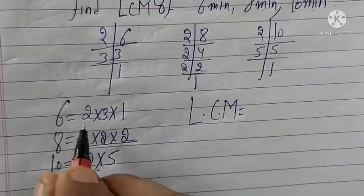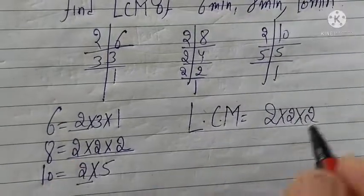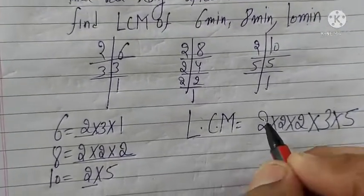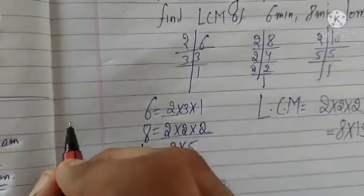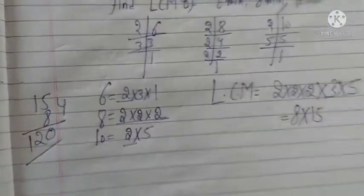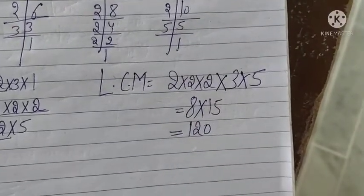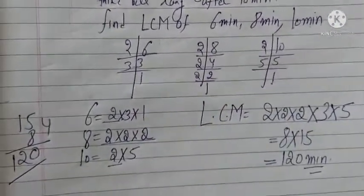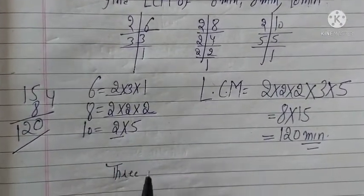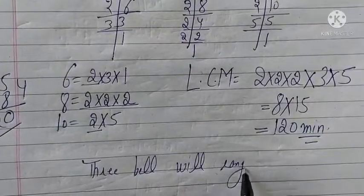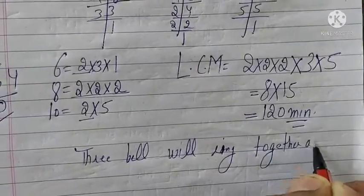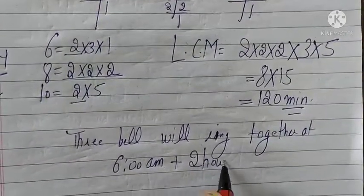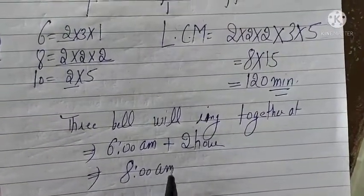For the LCM, we take 2 three times (from 8), then 3 (from 6), and 5 (from 10). So LCM = 2 × 2 × 2 × 3 × 5 = 8 × 15 = 120 minutes, which is 2 hours. So all 3 bells will ring together at 6 AM plus 2 hours, which is 8 AM. So this is the answer.